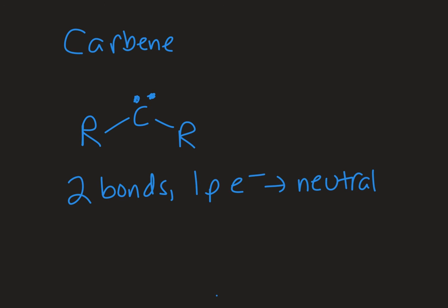The last intermediate I want to briefly mention is called the carbene. A carbene is a carbon atom that has two bonds attached to it and then it has a lone pair of electrons. It's neutral, it has a valence of four, but it doesn't have a full octet and that makes it pretty reactive.